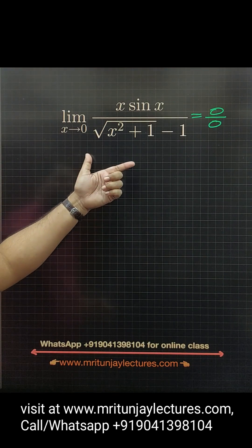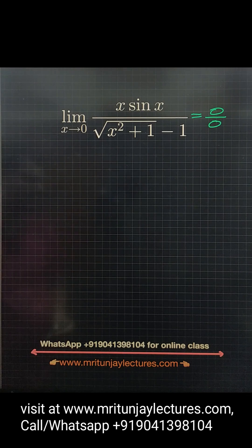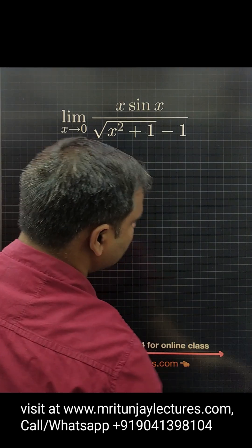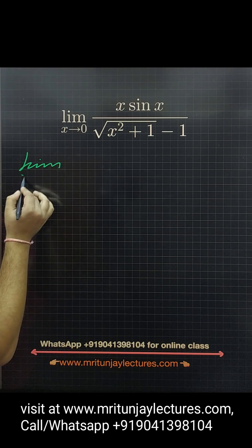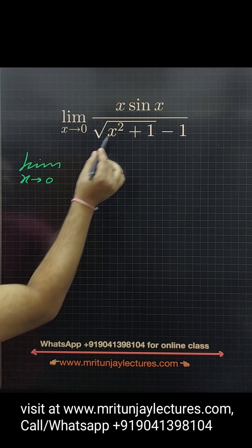It means you can do this question two methods: with the help of L'Hospital rule, otherwise conventional method. If you want, you can do this question with the help of conventional method.